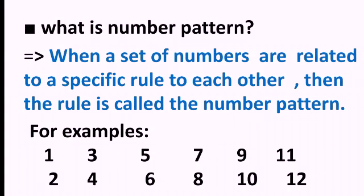For example: 1, 3, 5, 7, 9, 11. What specific rule is being followed here? Here, we are skipping one number each time. Because after 1, we know that there is 2, but we are not writing 2 — we are writing 3. So 1, 3, 5, 7, 9, 11 is an example of a number pattern. The rule is we are skipping one number — 2 is not there, 4 is not there, 6 is not there. We skip one number and write the next.